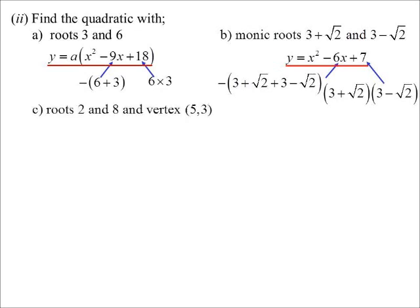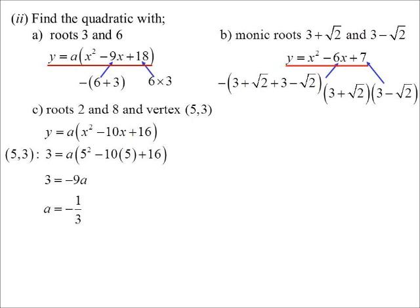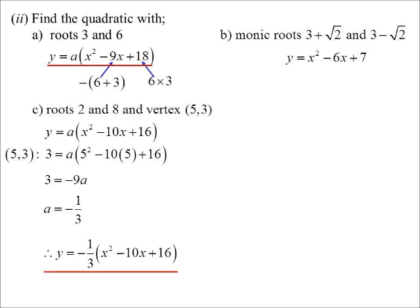Now, they've told me the roots are 2 and 8, but they've also given me some more information. The vertex is (5, 3). Right, so I'll use the same idea. I know it's going to be some multiple. Multiplying together, I get 16. Add them together, I get 10. So it's -10. But now I can actually work out what the multiple is because they've given me additional information. I know that when x is 5, y is 3. So if I substitute those values in, a little bit of calculation, we get a is -1/3. So our one must be, I've left it factorized rather than multiply everything by -1/3, but -1/3 times (x² - 10x + 16).